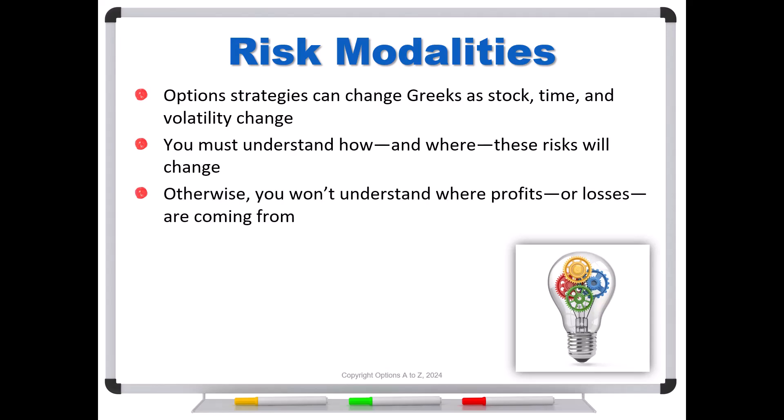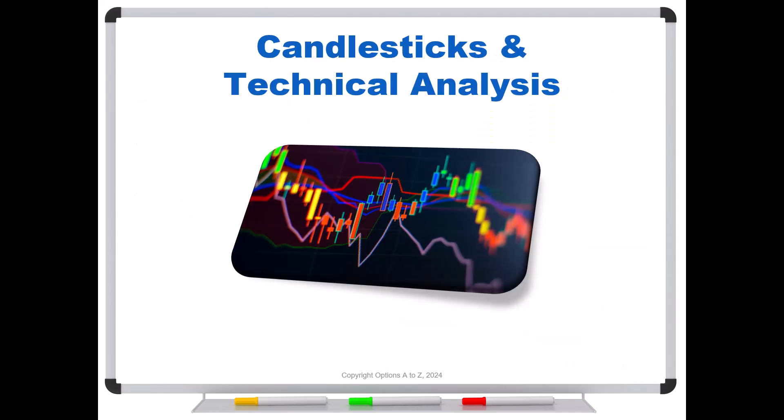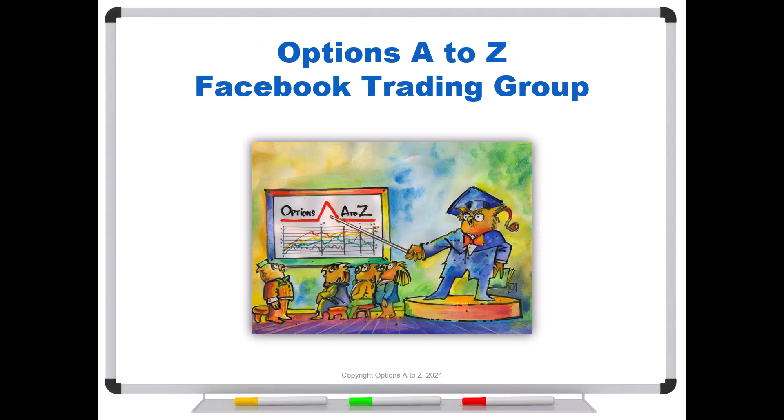So just remember with risk modalities, option strategies can change their Greeks as the stock, time, and volatility change. And you must understand how and where these risks will change. Otherwise, you won't understand where your profits or losses are coming from. And if you don't understand where they're coming from, you're trading in the dark, and that's only going to lead to bad outcomes over time. And for anyone who'd like to learn more about the art and science of options trading, please check out the Alpha Trader course, Strategy Lab, and a candlesticks and technical analysis course. It's all at OptionsAtoZ.com. Also, please join us on Options A to Z's Facebook trading group, and you can find a link in the description below.